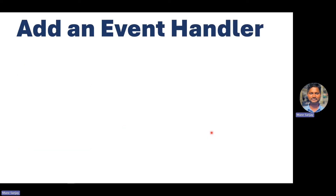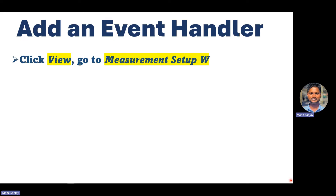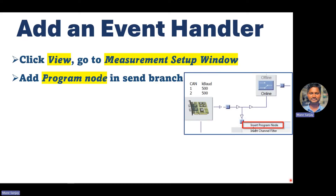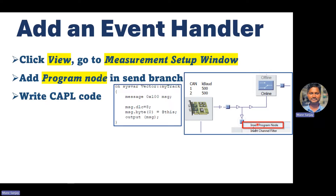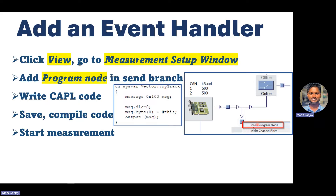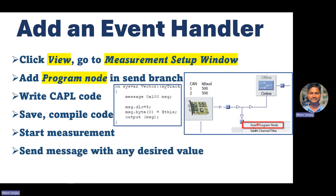To add an event handler, click on View and go to the Measurement Setup window. Add a program node in the transmit branch in CANalyzer by right-clicking on the hotspot and inserting the program node. Then write CAPL scripting where you can access the system variable, apply methods, create messages, and write the logic. Save it, compile it, remove any errors, and start your measurement. As soon as you start sending the message, you vary your desired value and see it live in your CAN message.